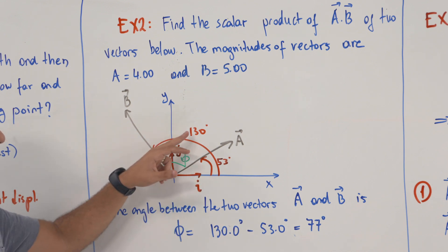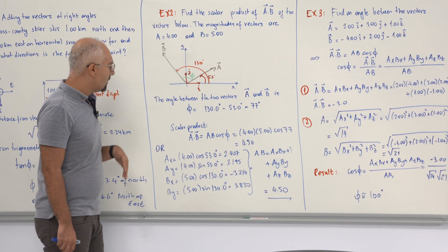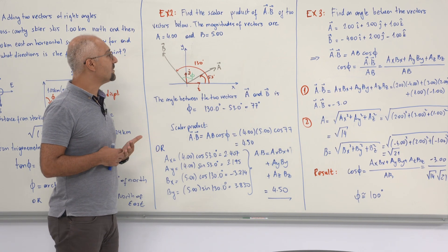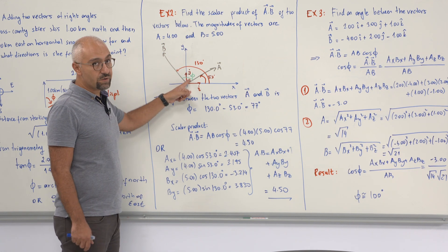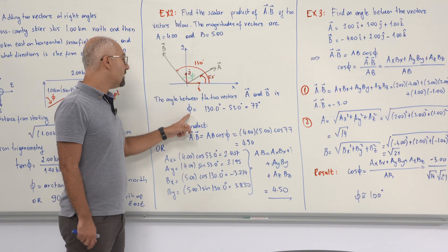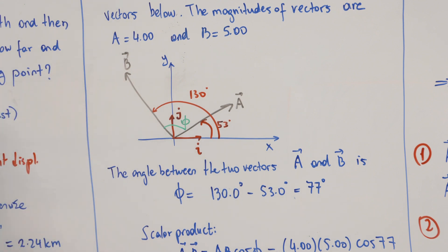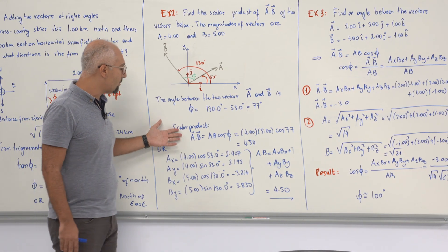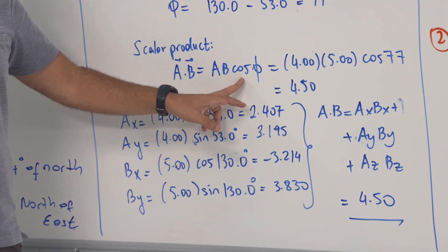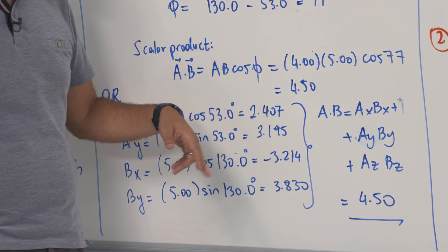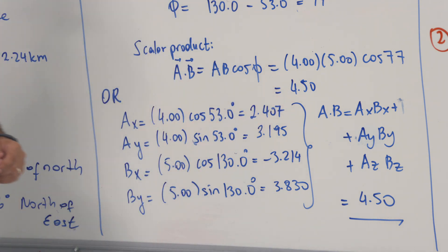Vector B is at 130 degrees from the x-axis. To find the scalar product, we need the angle phi between vectors A and B — shown as the green line. Phi is simply 130 minus 53, which gives 77 degrees. Applying the scalar product formula — magnitude of A times magnitude of B times cosine(phi) — gives 4 times 6 times cosine(77), which is approximately 4.50.